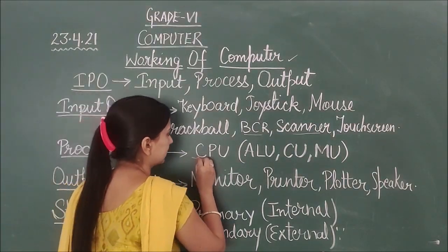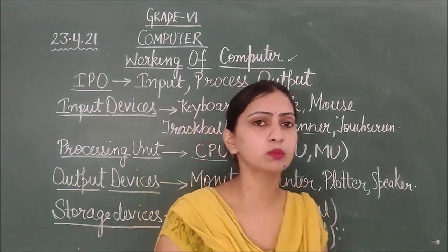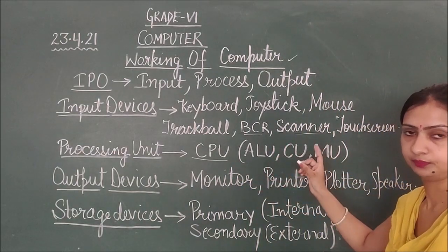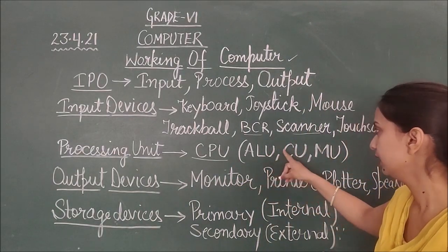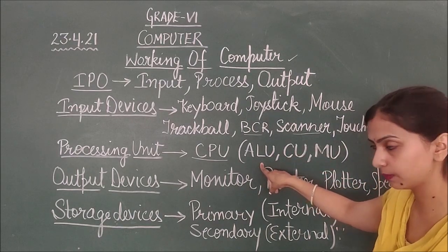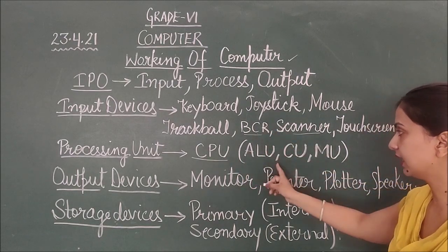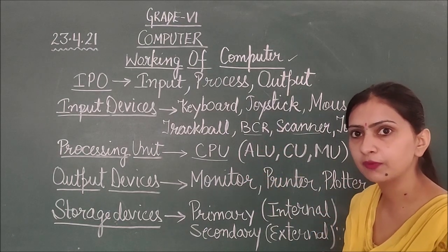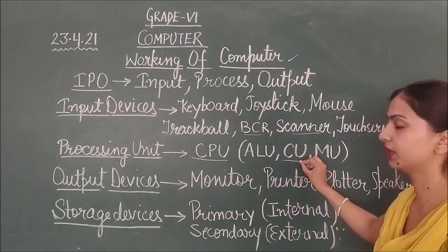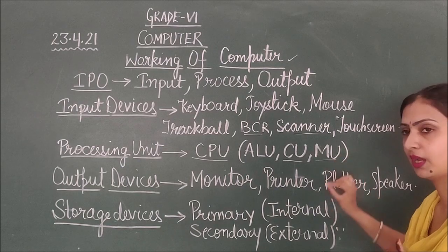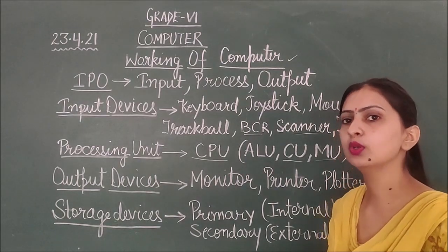Next is touchscreen. You know very well all of you are using android things. These are processing unit. Processing unit CPU has three parts: ALU, CU, MU. Arithmetic Logical Unit does arithmetic logical calculations. Control Unit controls operations. And last Memory Unit stores data.